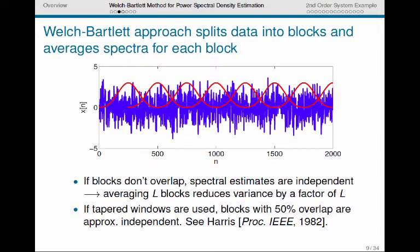The Welch-Bartlett approach splits the data into a series of blocks. Here I've indicated these blocks by these red windows, and then it averages the spectra for each block. Now I've shown here the use of a non-rectangular window, a tapered window. I think it's a Blackman window. It's tapered and goes to zero towards the edges.